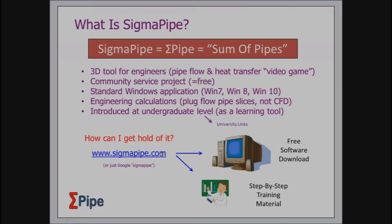The rest of it you can read for yourselves. The one point I want to emphasize is that it's not a computational fluid dynamics package in the conventional sense — where you chop the flow domain up into tiny little volumes and look for swirl flows and stuff like that. It's not doing any of that. It's only doing plug flow calculations down pipes of one form or another. You can set where those cuts are, but you can't do anything about profiles across them. That's why it's engineering calculations, not computational fluid dynamics calculations.